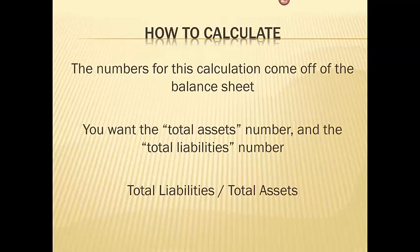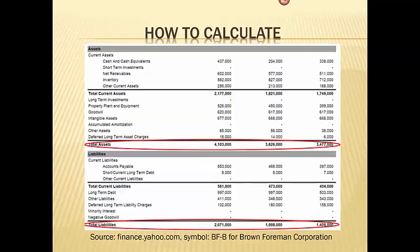First, how do we calculate this? The numbers for this calculation come off of the balance sheet. You want to pull the total assets number and the total liabilities number. We take total liabilities and we divide by total assets. Here's an example of where we're pulling this information — this is for Brown Foreman. I'm pulling their balance sheet off of yahoo.finance.com and highlighting the line I'm talking about on the balance sheet itself.